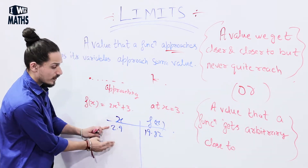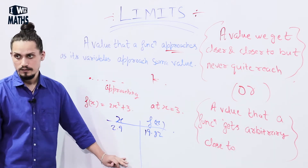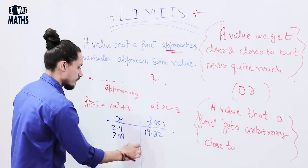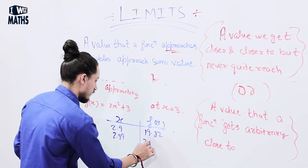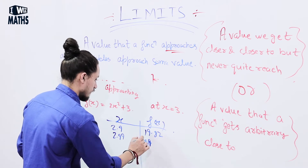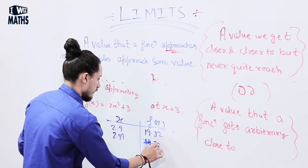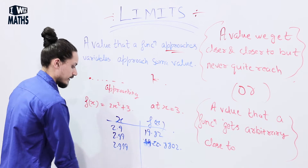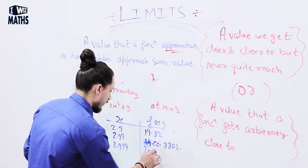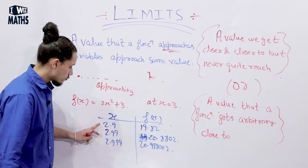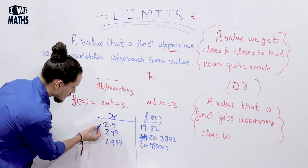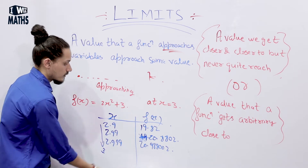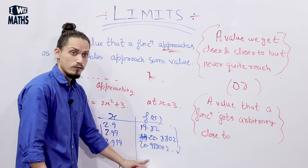Now I want to get closer to 3 because I'm approaching this value. At x = 2.99, I'll get the value 19.8880... sorry, 20.8880. And then at x = 2.999, I'll get the value 20.9880. As we observe this, we see that as the value of x is approaching 3, the value of f(x) is approaching 21.